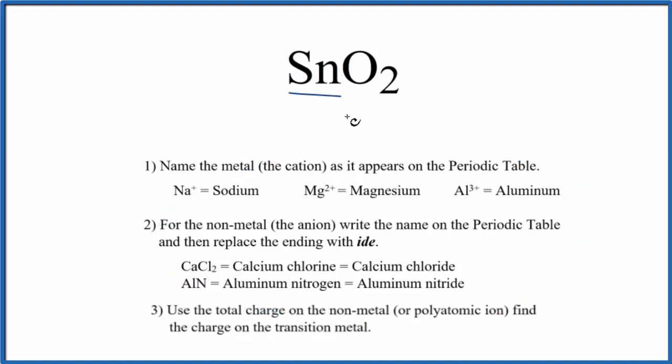First, we write the name of the metal, that's just tin. Then we write the name of the nonmetal, that's the oxygen. So oxygen, lowercase o, and we're going to replace the ending with I-D-E. So we cross this out, I-D-E.